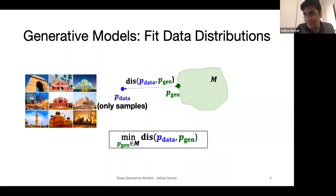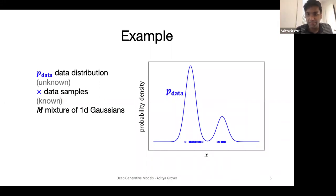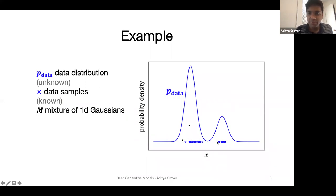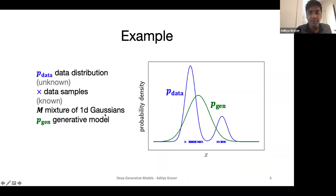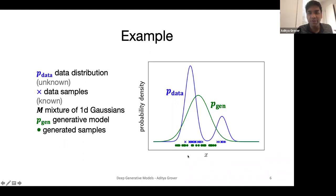Let's look at a quick example. In this one-dimensional example, we have sample access to a ground-truth distribution — a mixture of two Gaussians, where the first Gaussian is three times more likely than the second. We observe more samples from the first mode. We pick a model family M — say, a mixture of 1D Gaussians — and find the generative model within M that best approximates this distribution. The reason this model is called generative is that once learned, we can obtain samples from it, or generate new data at test time.